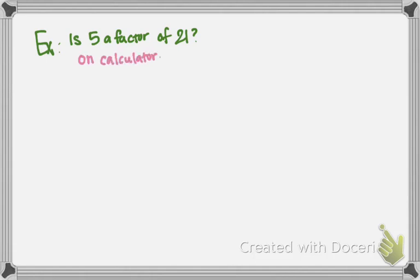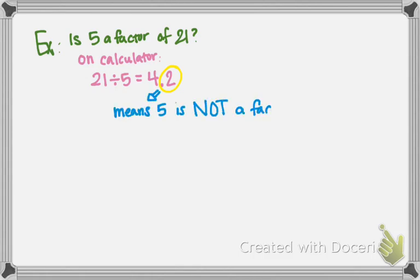So on your calculator, you should have done 21 divided by 5, and the calculator should have told you 4.2. So what does that mean? Does that mean 5 and 4.2 are factors of 21 or are not? If you said no, then you're right.